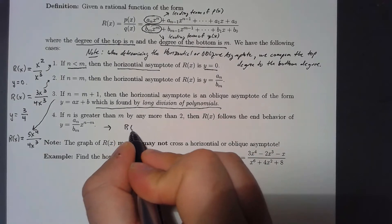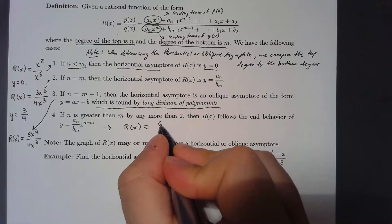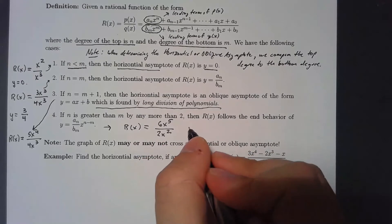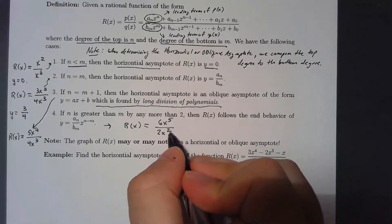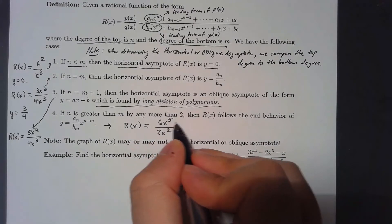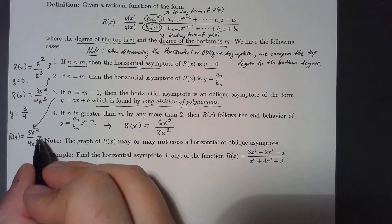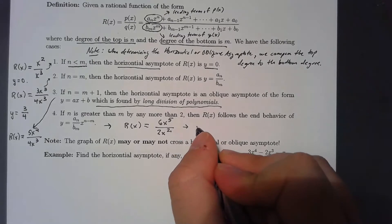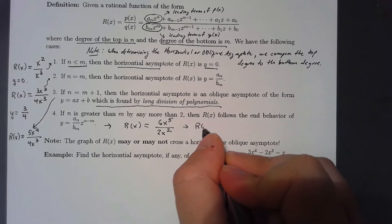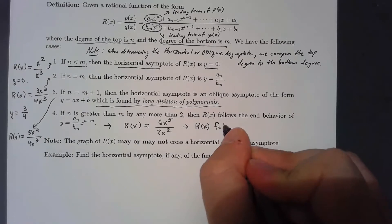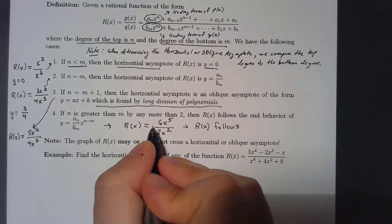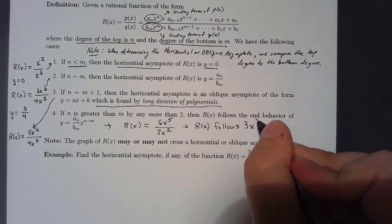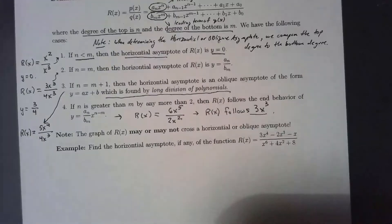Case 4: if the top degree exceeds the bottom degree by more than 1 — for example, 6x⁵ / 2x², where the difference is 3 — the function follows the end behavior of the ratio of leading terms. Here 6x⁵ / 2x² simplifies to 3x³, so r(x) follows the end behavior of 3x³.